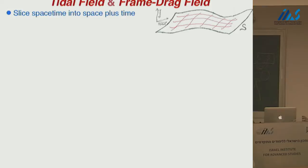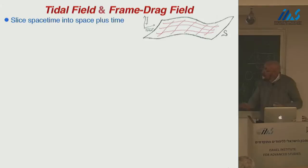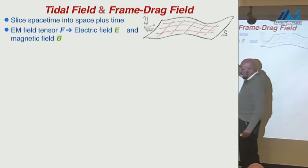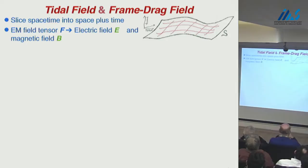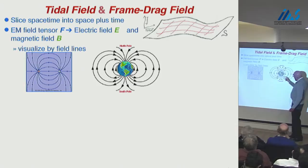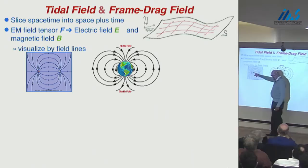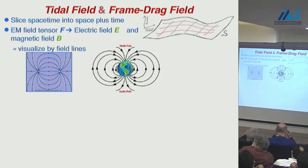If we divide space-time into space-plus-time by picking a family of space-like hypersurfaces, as is almost always done in numerical relativity — now a very mature field — the electromagnetic field tensor, which lives in four-dimensional space-time, splits up into the electric field and the magnetic field, which live in the hypersurfaces we have chosen. We visualize the magnetic field by field lines like those around the Earth, and the electric field by electric field lines like those between a positive and negative charge.